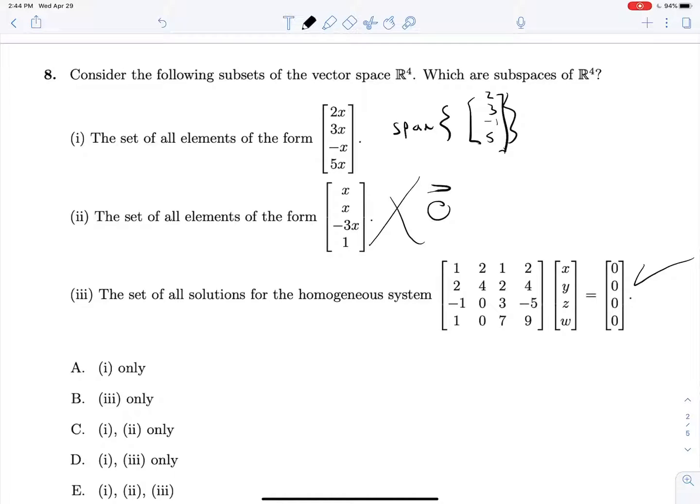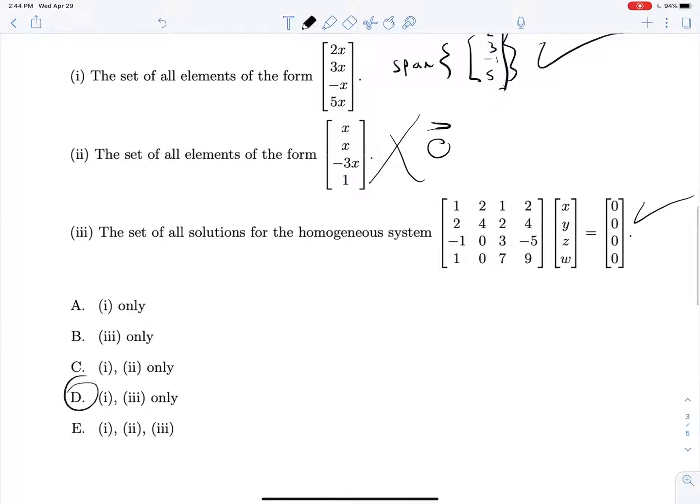And then, it goes to infinity in both directions. So take any element along that line and multiply it by whatever constant you want. You will still be on that line. So this guy is also good. So 1 and 3 is correct.